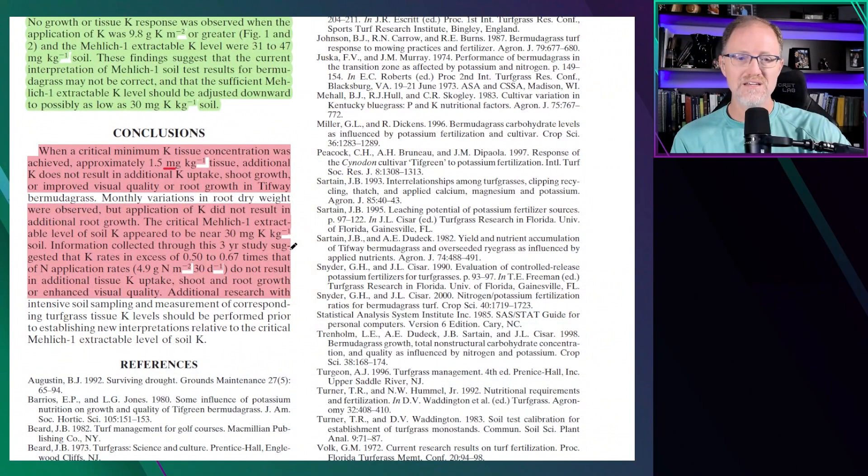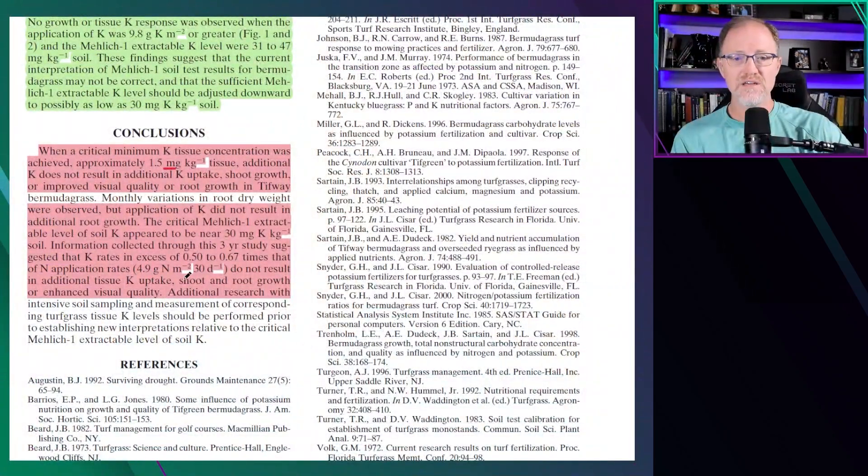Information collected throughout this three-year study suggests that potassium rates in excess of 0.5 to 0.6 times that of nitrogen—so that's about a 2 to 1 N:K or 2 to 1 and a smidgen more, 1.5 to 1 N:K—do not result in additional tissue uptake, shoot and root growth, or enhanced visual quality. So that's the take-home message. Anything greater than a 2 to 1 N:K, maybe just a little bit more than a 2 to 1 N:K, anything more than that didn't result in any additional benefit. And so all these potassiums going out at 1 to 1s and 1 to 2s, these 10-10-10s and these 13-13-13s and 10-0-20s and all these very high potassium fertilizers—they, in this study, showed clear evidence that in this setting there was no additional benefit once you got to about a 2 to 1 N:K or thereabouts.